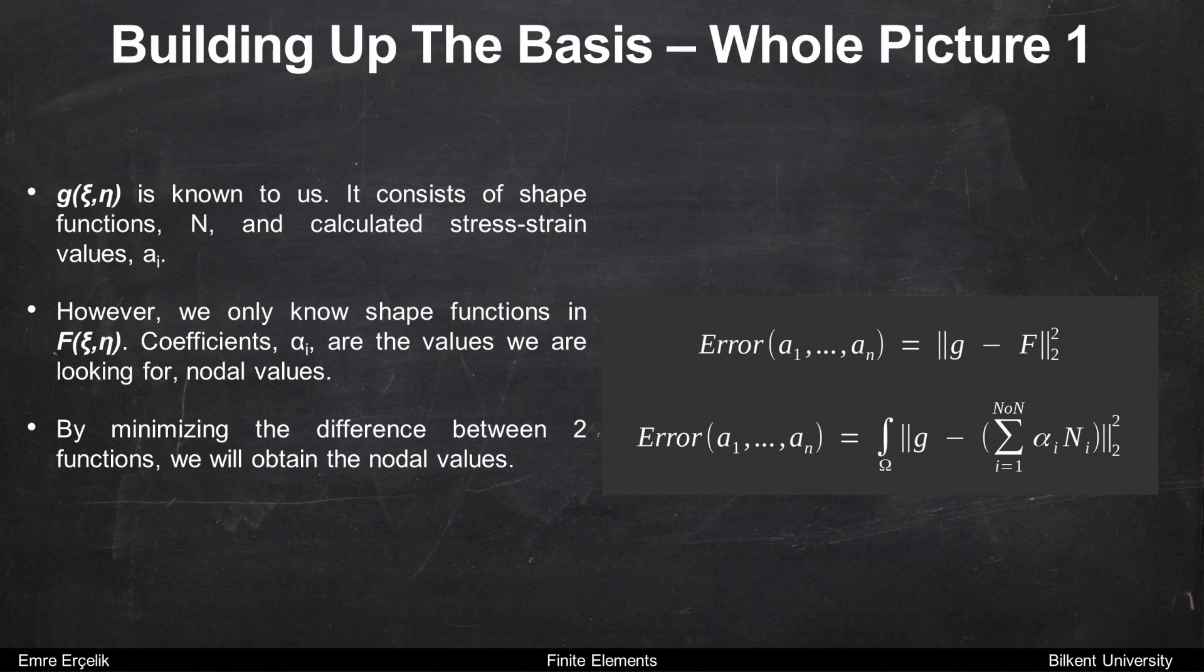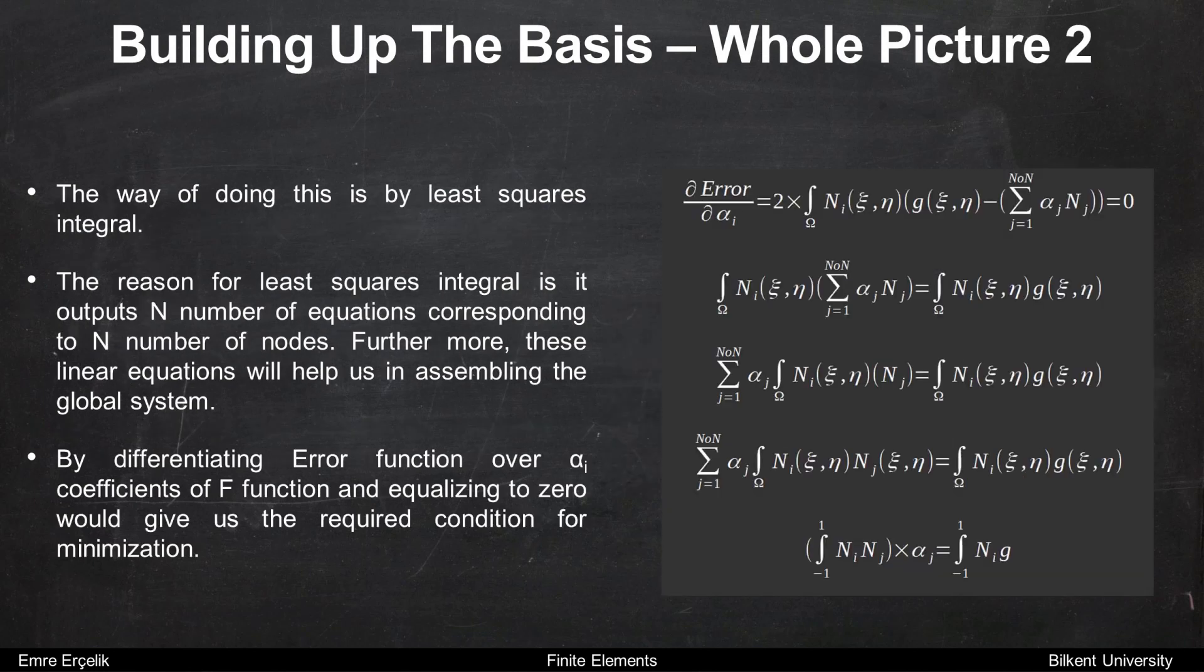G is known to us. It consists of shape functions N, and the calculated stress-strain values a. However, we only know shape functions in F. Coefficient alphas are the values we are looking for. They are the nodal values. By minimizing the difference between two functions, we will obtain the nodal values. The way of doing this is by least squares integral.